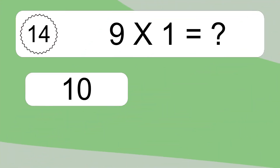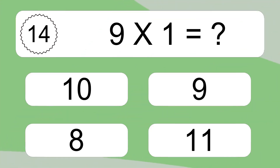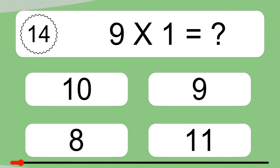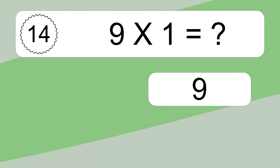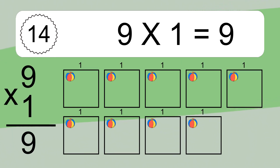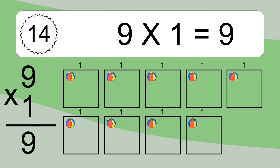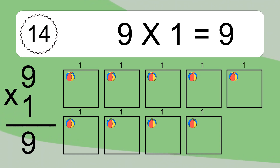9 times 1 equals what? 9 times 1 equals 9. We have 9 boxes, and each box has 1 colorful ball inside. If you count all the balls in all the boxes together, you will have 9 times 1 balls. This equals 9 balls.